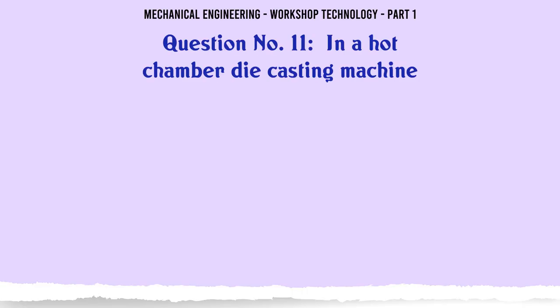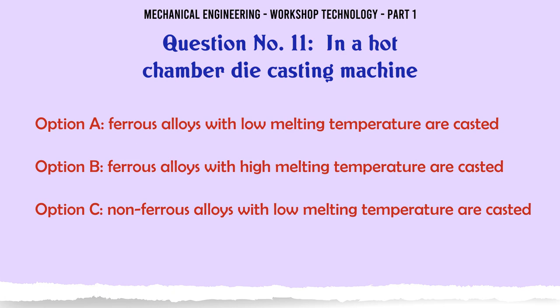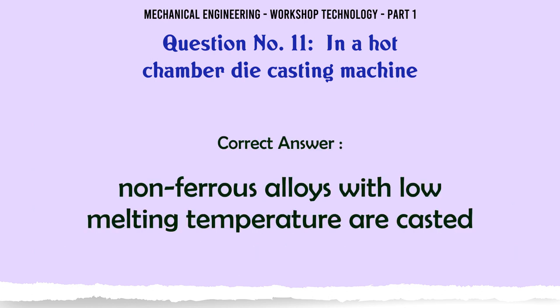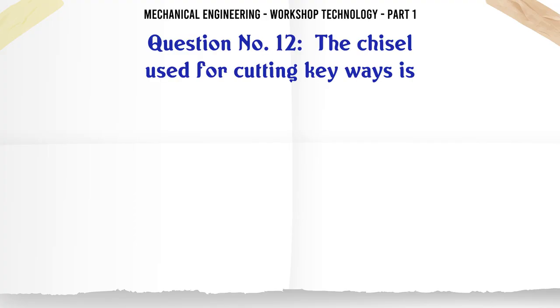In a hot chamber die casting machine: A. Ferrous alloys with low melting temperature are casted. B. Ferrous alloys with high melting temperature are casted. C. Non-ferrous alloys with low melting temperature are casted. D. Non-ferrous alloys with high melting temperature are casted. The correct answer is: Non-ferrous alloys with low melting temperature are casted.